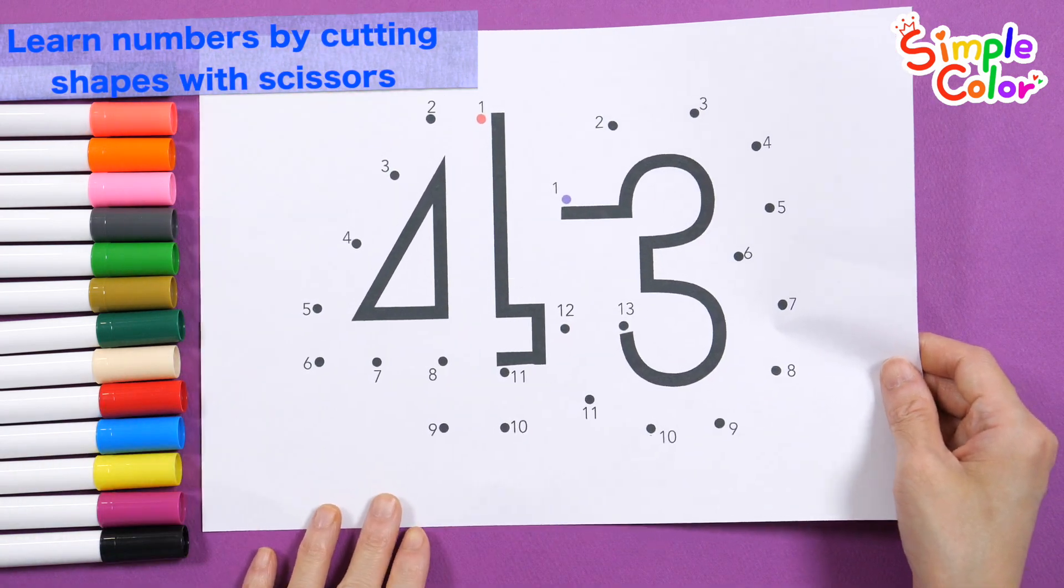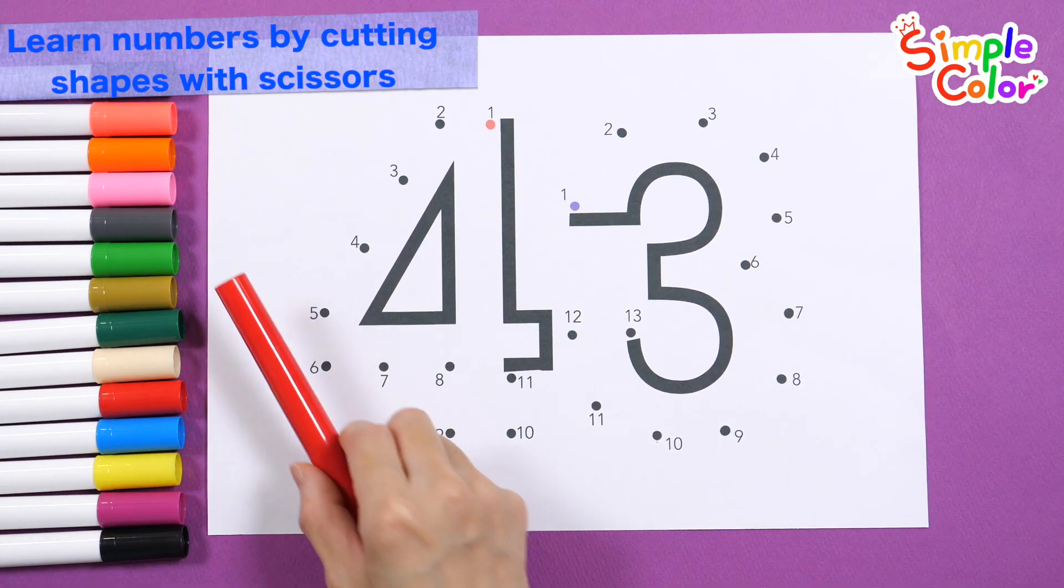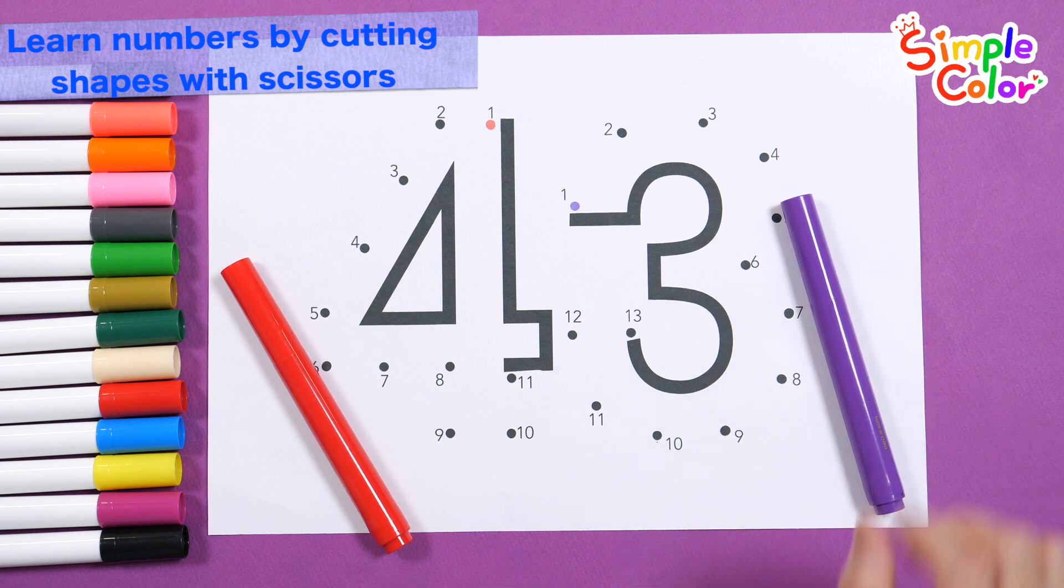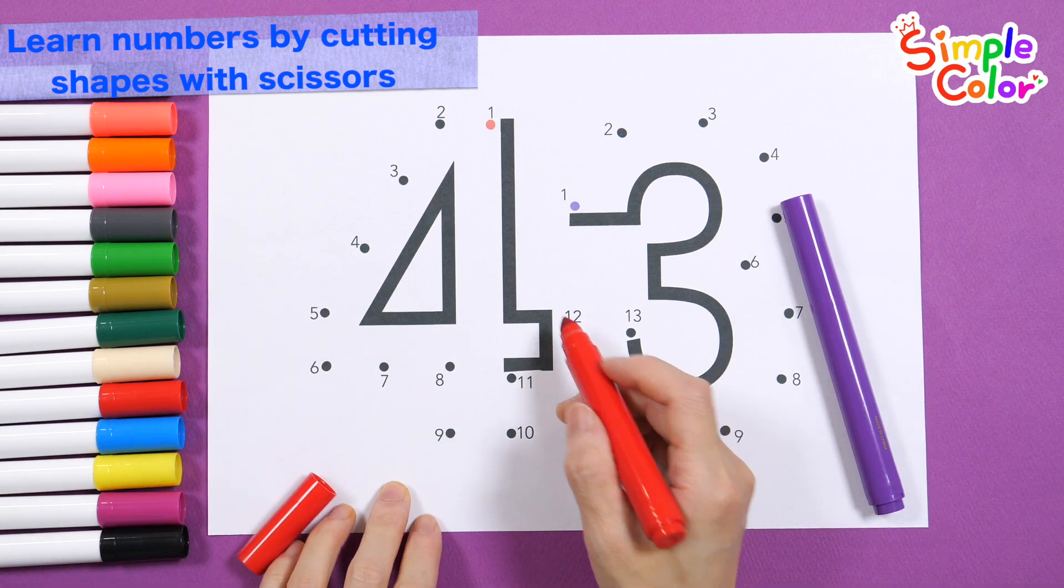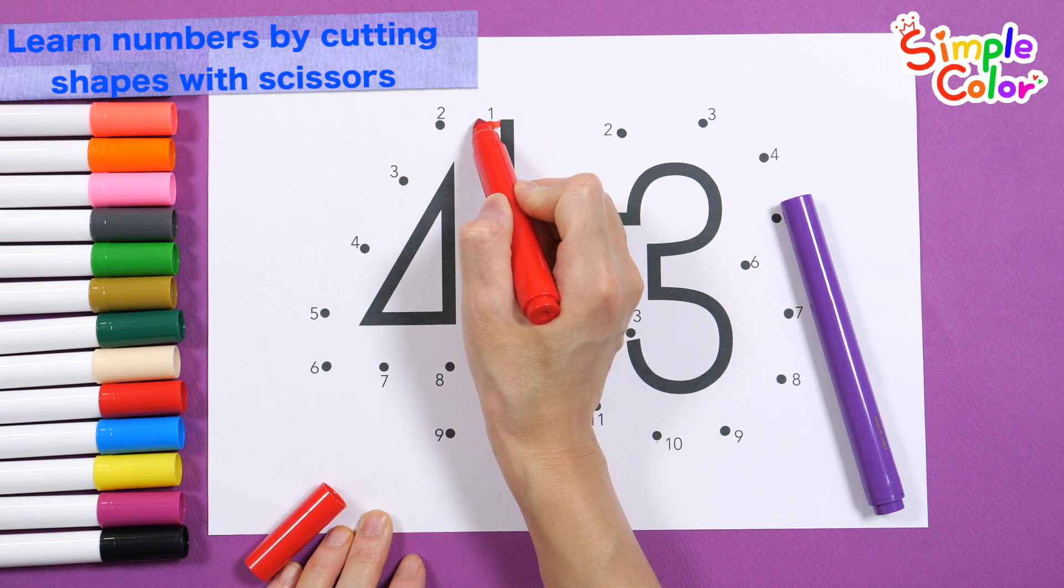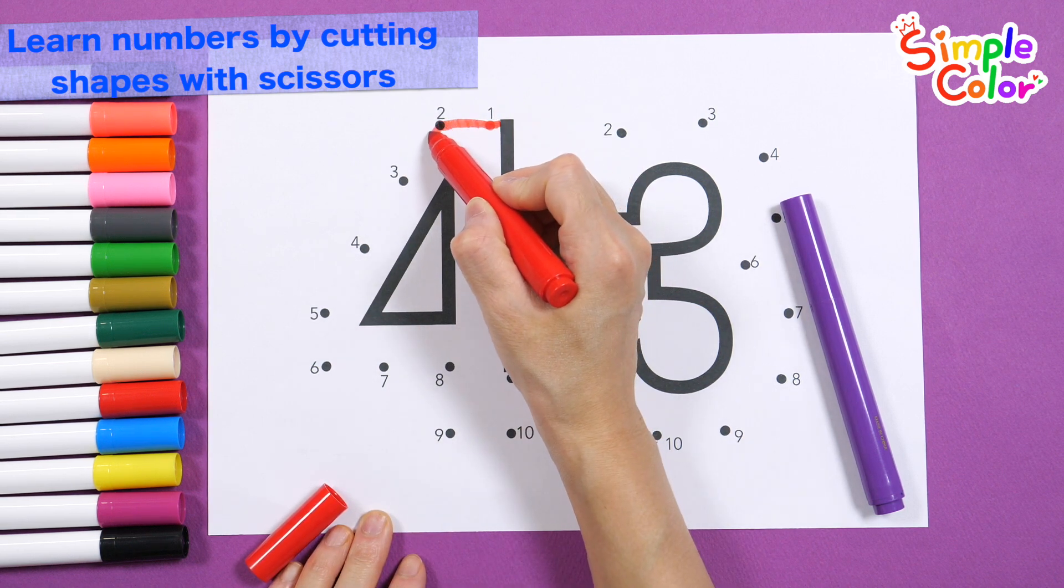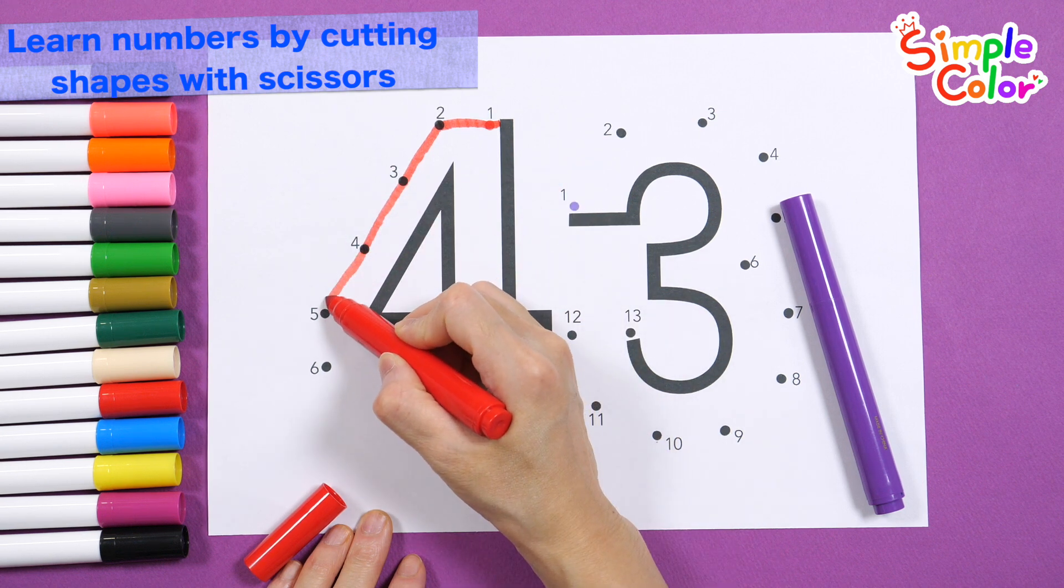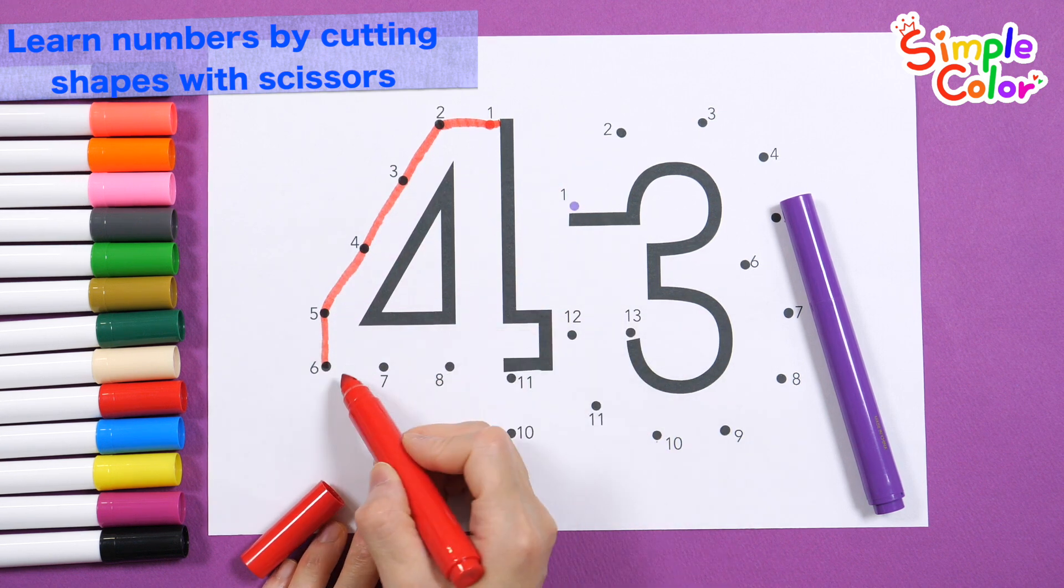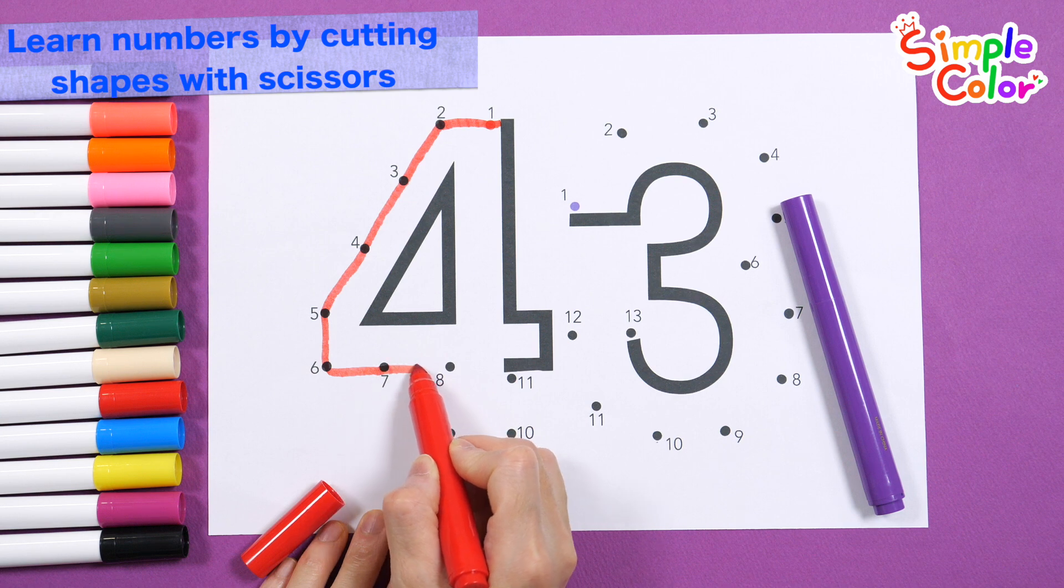Let's complete the numbers by connecting the dots in order starting from number 1. First, let's connect the orange number 1. 1, 2, 3, 4, 5, 6, 7, 8.